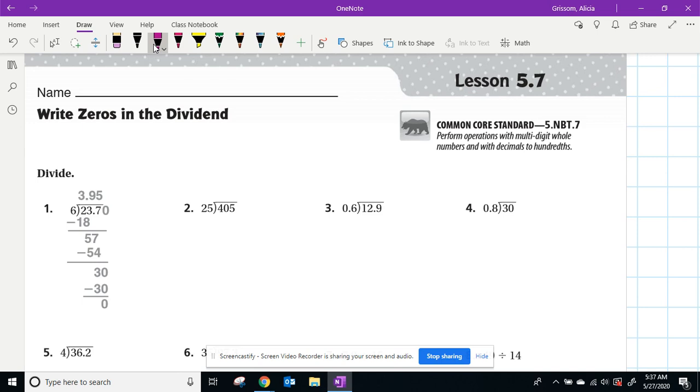So they provided an example for us for number one. As you can see, there is a decimal in the dividend. What I want to make sure you understand is when you add a zero, when there's a decimal and you add a zero in the dividend, it does not change the value of that number.